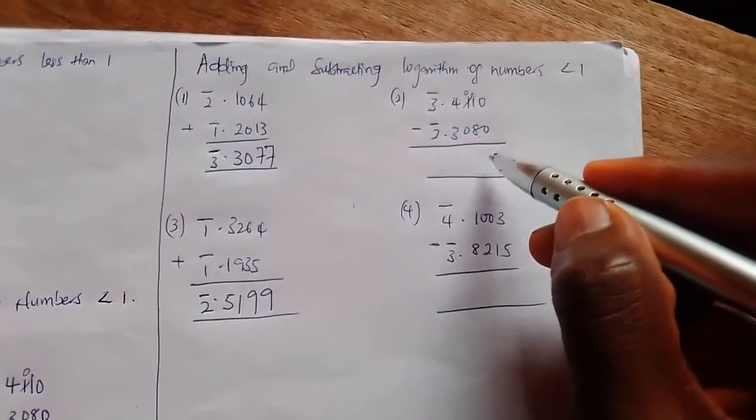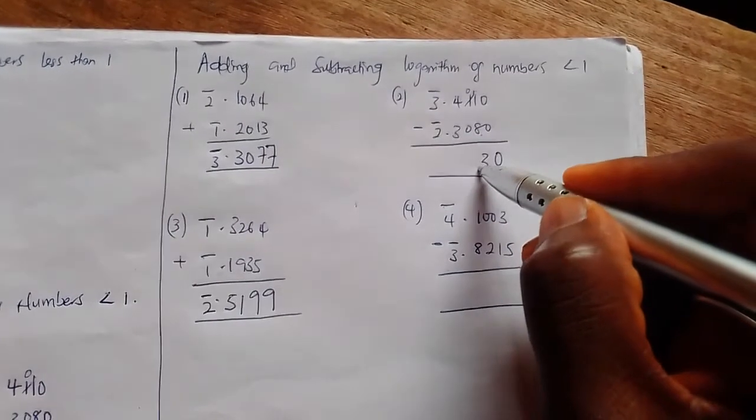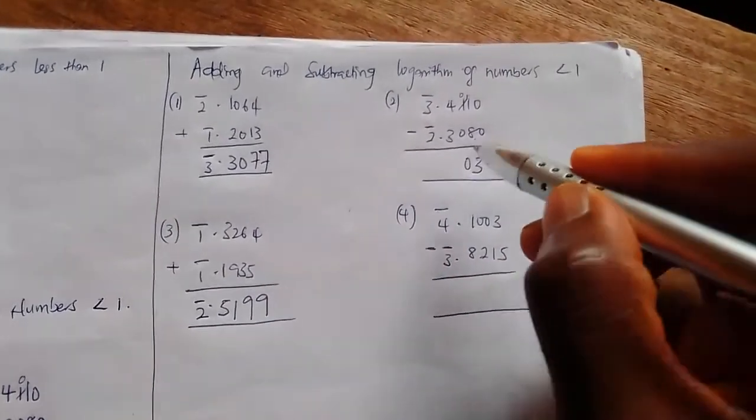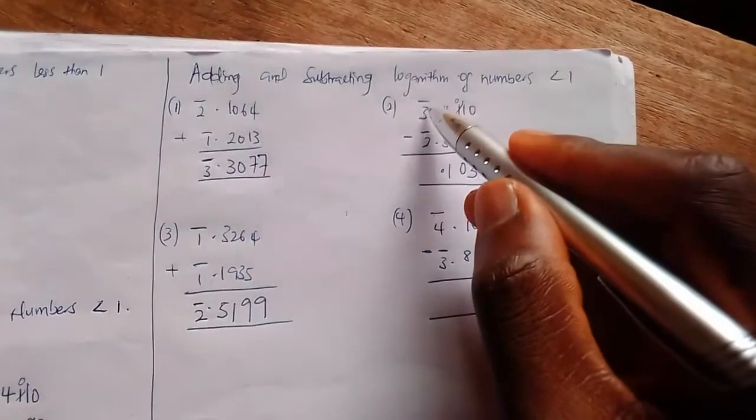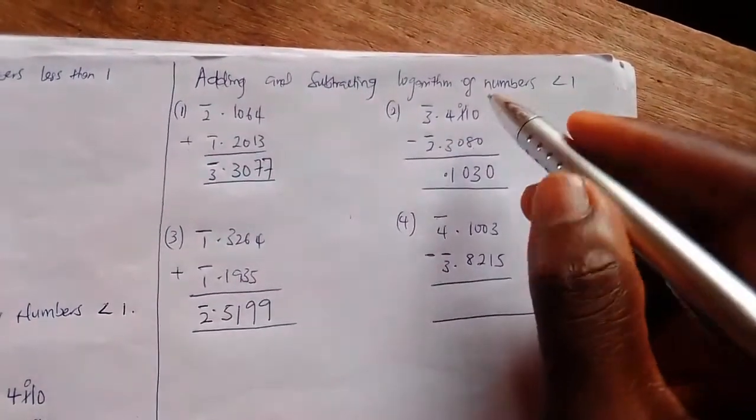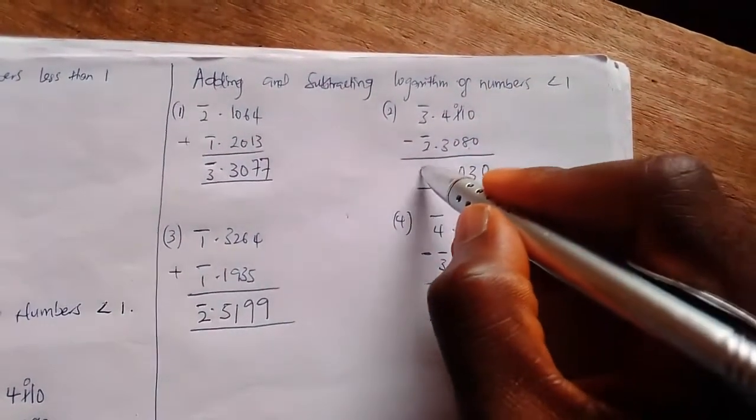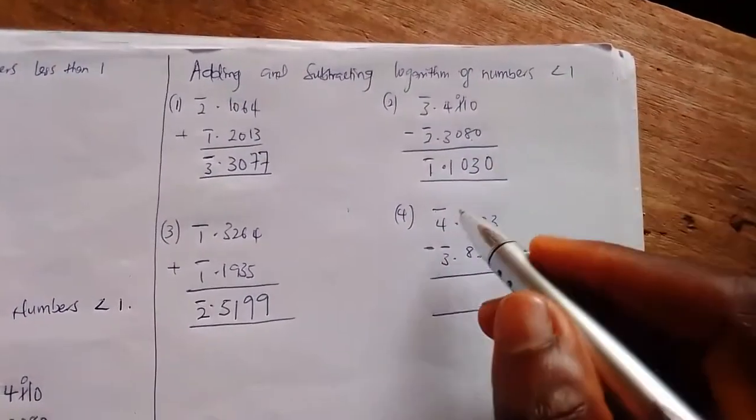Zero minus zero is zero, four minus three is one. Bar three minus bar two, that's minus three plus two, which gives us minus one. In logarithm it is written as bar one.